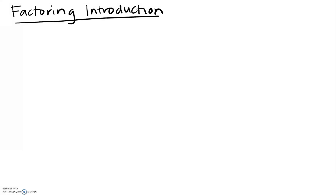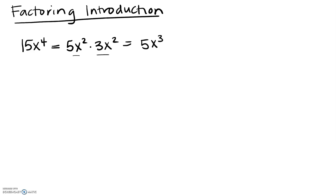This video is an introduction to factoring — what we covered on the first day of module 11. Factoring is basically breaking things down into pieces that can be multiplied together; those pieces are your factors. For example, 15x to the fourth can be factored in many different ways: as 5x squared times 3x squared, or as 5x cubed times 3x, or as 15x times x cubed.